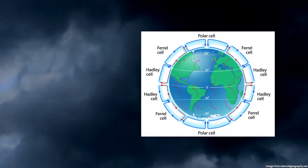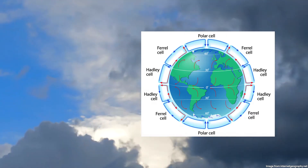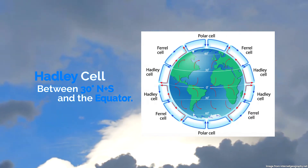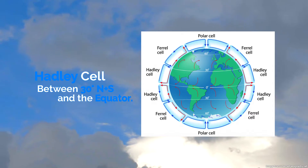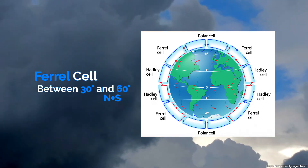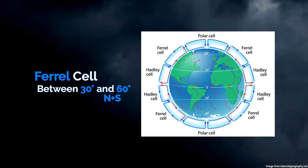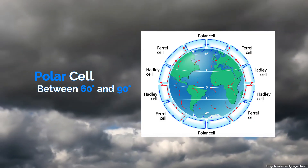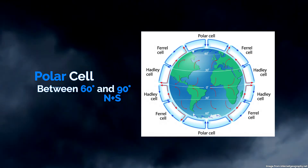The global atmospheric circulation model features 3 different cells. The Hadley cell is between the equator and 30 degrees north and south. The Ferrel cell is between 30 degrees and 60 degrees north and south. And finally the polar cell is between 60 degrees and 90 degrees north and south.